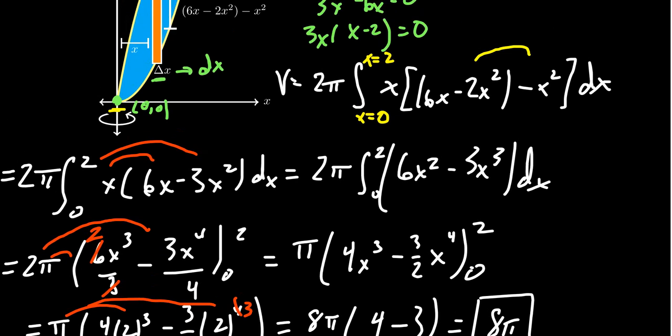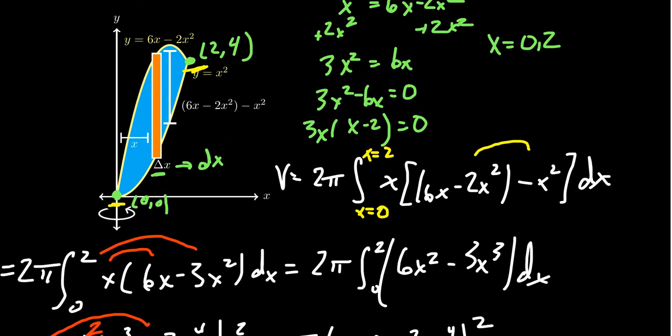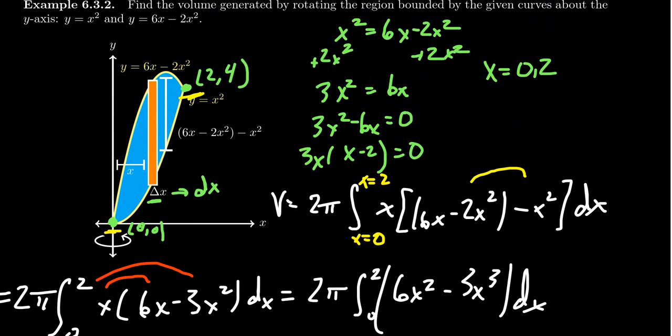And so we calculated this using the shell method. If one was using the washer method to try to calculate these things, notice a typical cross-section would look like this rectangle right here. And so as you rotate this thing around the y-axis, there's going to be a hole in it.